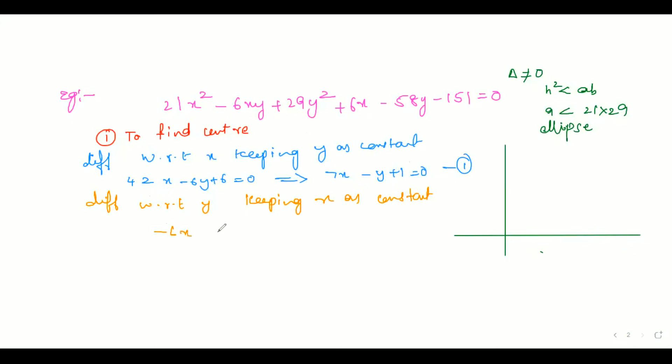So what is the equation I am going to get here? Minus 6x plus 58y minus 58. So once we get this equation, we can further simplify this and write it as minus x minus 29y plus 29 equals 0. This is the second equation. Now solving 1 and 2 gives you the center as, we get center as 0 comma 1.